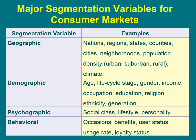When we speak about geographic base, we are speaking about cities, states, regions, and countries. When we speak about demographics — the most popular base for market segmentation — we are speaking about age, life cycle, gender, income, education, occupation, religion, and so on. Psychographic base covers social class, lifestyle, and personality.